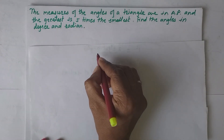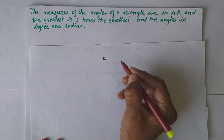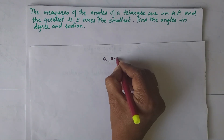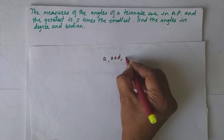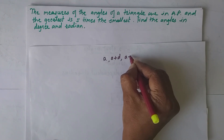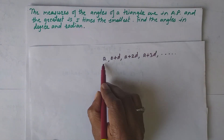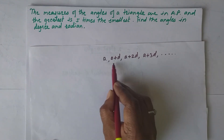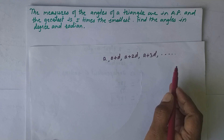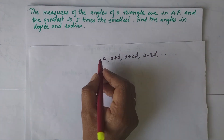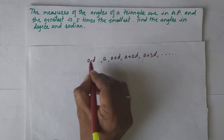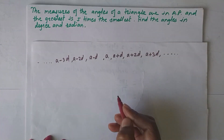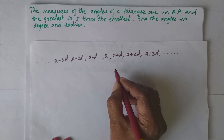In arithmetic progression, if a is the first term and d is the common difference, then we can write the terms of the arithmetic progression like this. If we have to find terms in descending order, you can take terms accordingly.